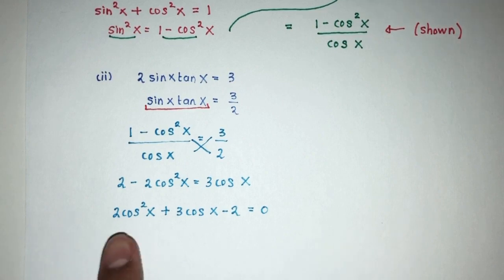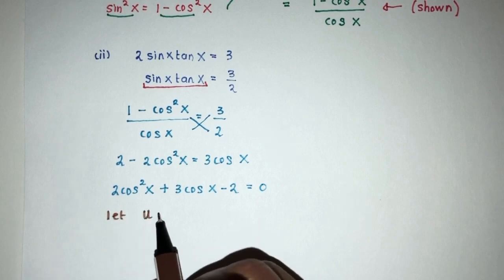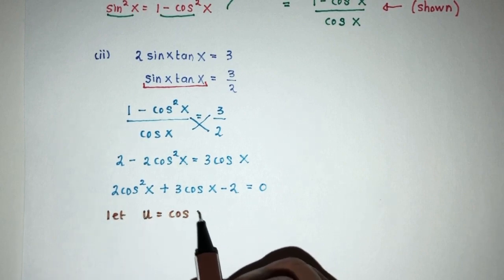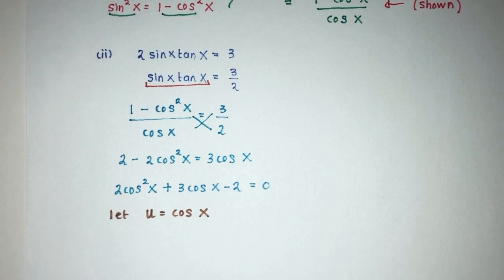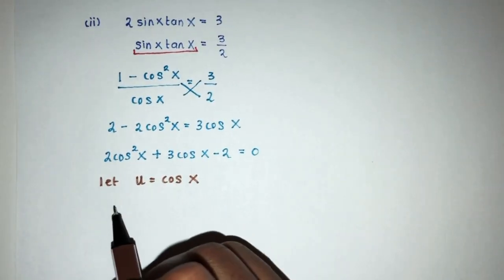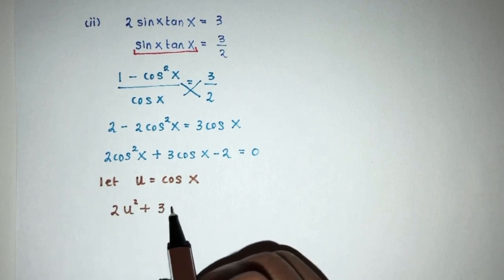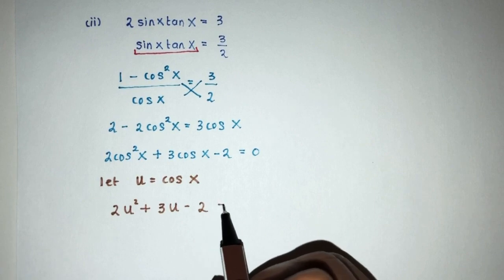Now sometimes, cos can be kind of scary to work with, so we can do this. We can let u equal to cos x. This is just to help you out. If you don't need to, no problem. Continue. But if you want to, you can always do that. You will have 2u square plus 3u minus 2, that will be 0.